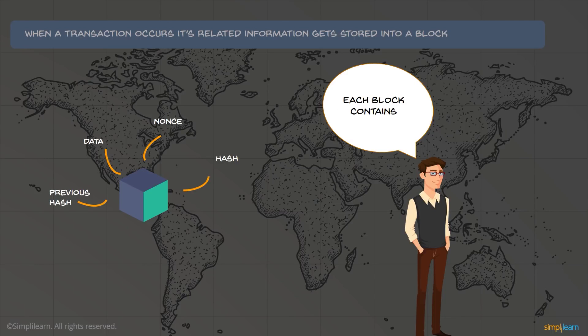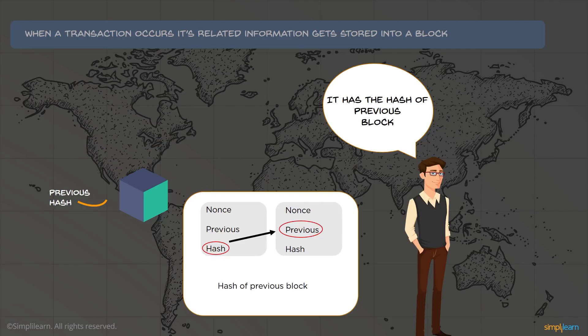There are four major components. Each block contains a previous hash, data — which is the aggregation of the transactions in the block — a nonce value, and the hash of the block itself.